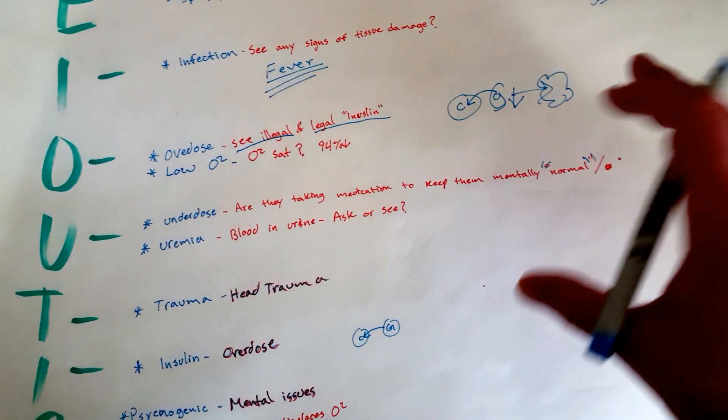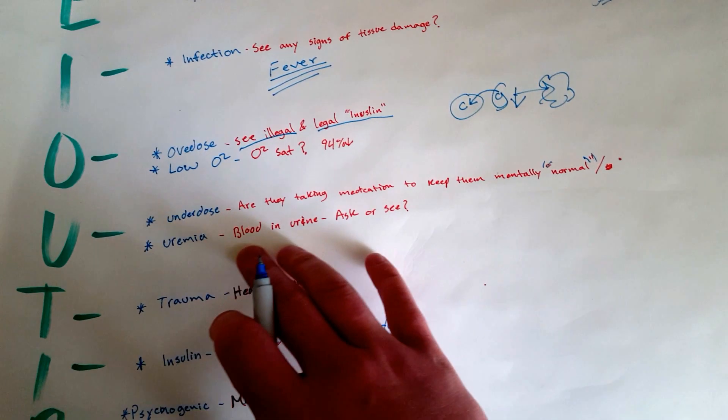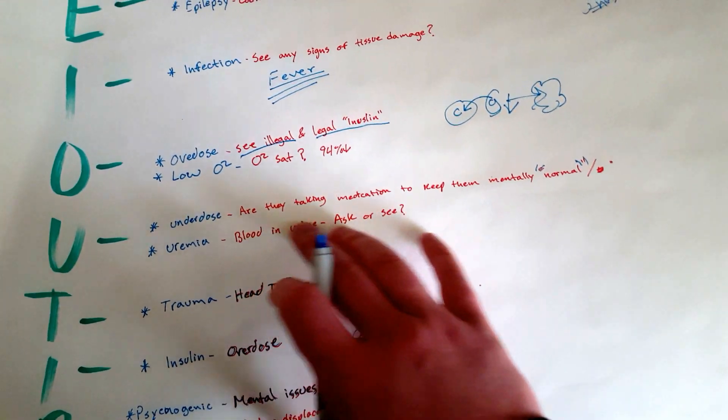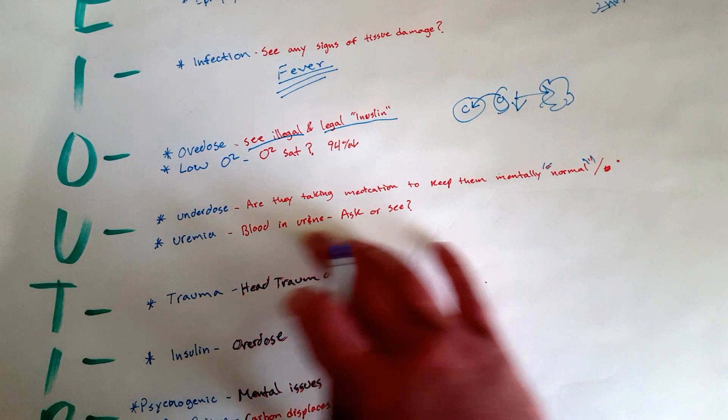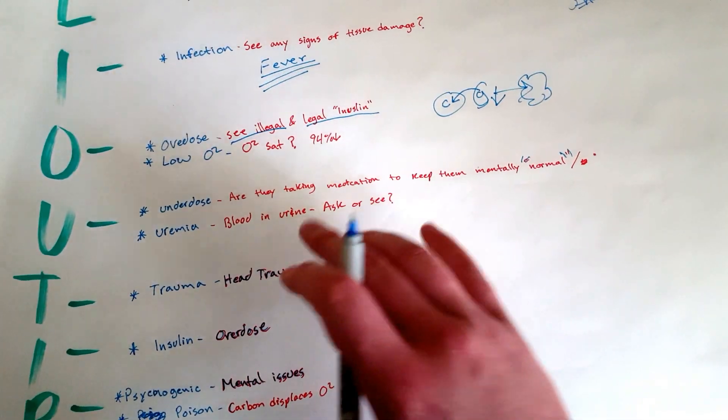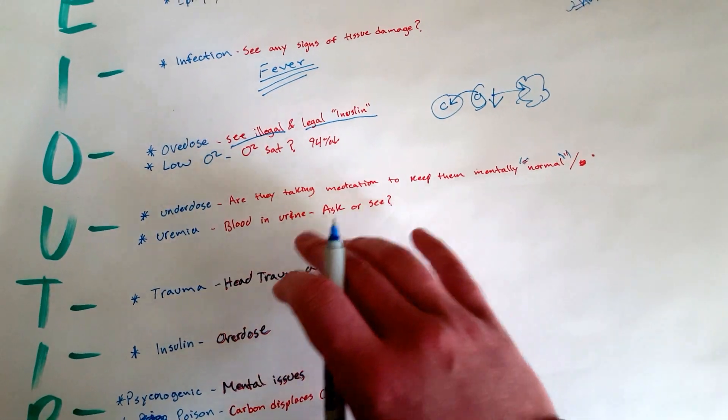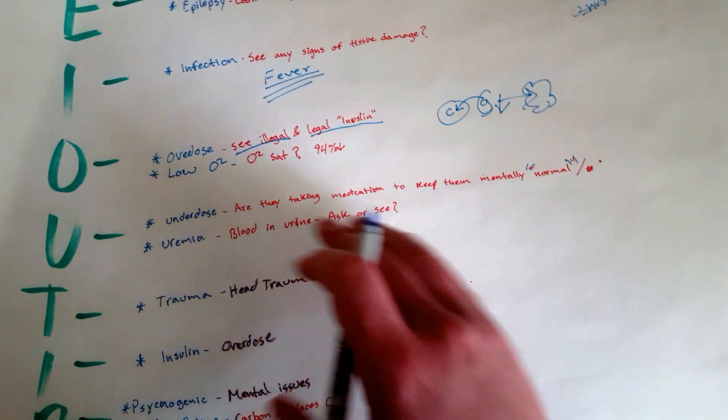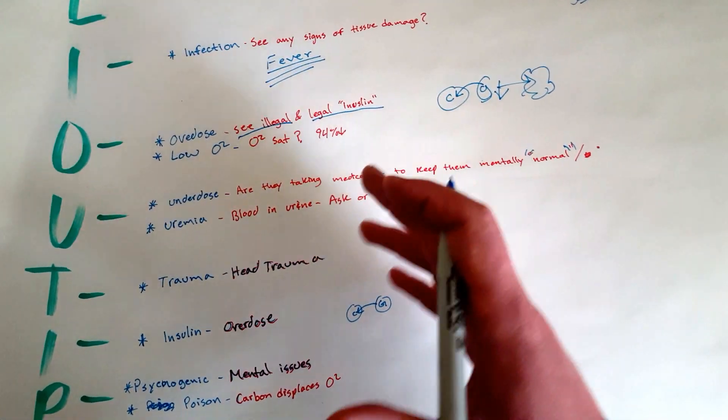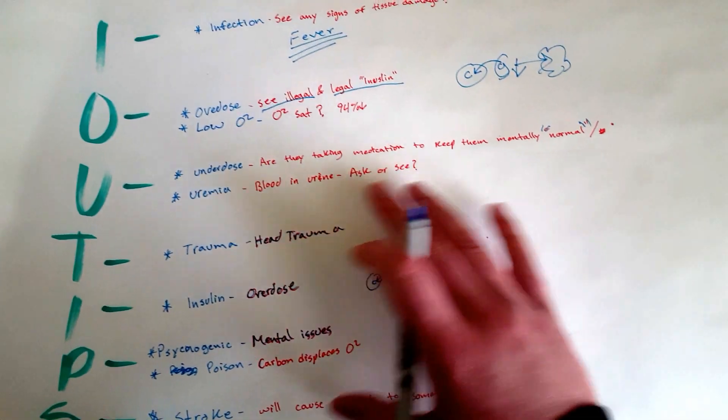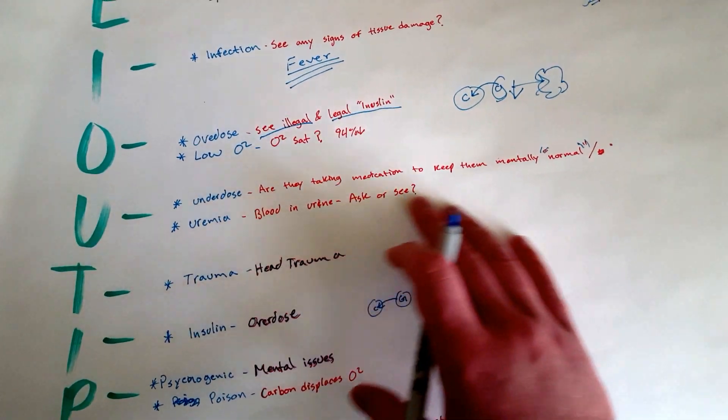U: Uremia, blood in urine. This could be caused by numerous issues, and really the only way you would know is if you ask them and they want to answer you, and also if you see urine on their clothing, on their trousers, on their pants, their dress, whatever they're wearing.